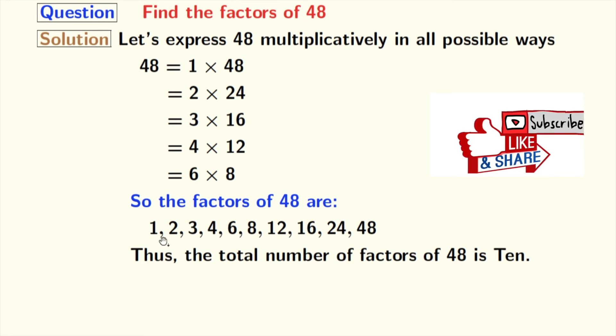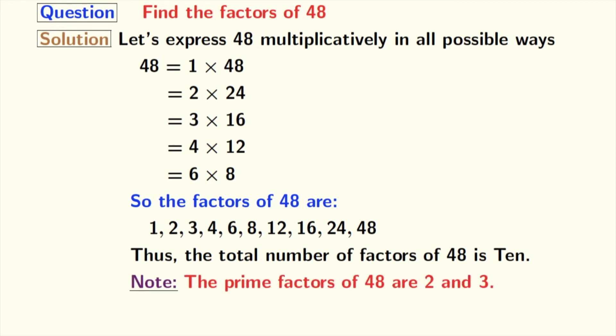Now give a close look among these factors and we see that among these factors 2 and 3 have no divisors other than 1 and that number itself. So 2 and 3 are prime numbers. So the prime factors of 48 are 2 and 3.